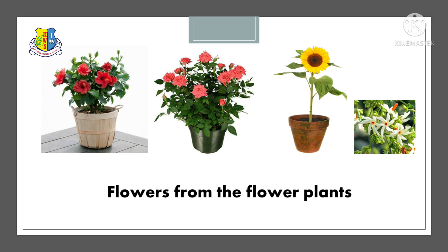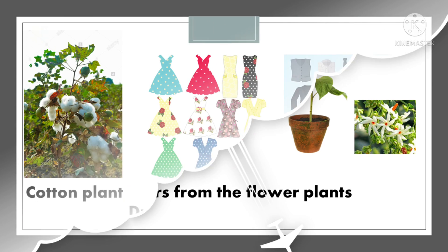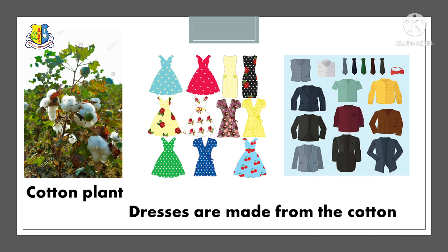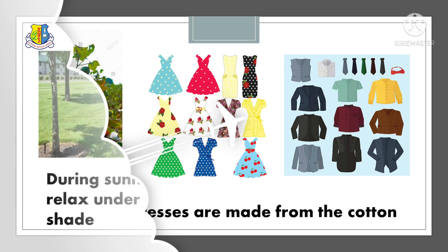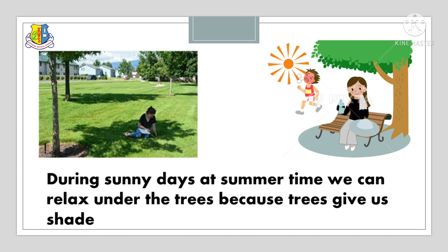Flowers — we can get flowers from flower plants. Examples: hibiscus, rose, sunflower, and jasmine. Cotton plant — these dresses are made from cotton. We can get cotton from the cotton plant.